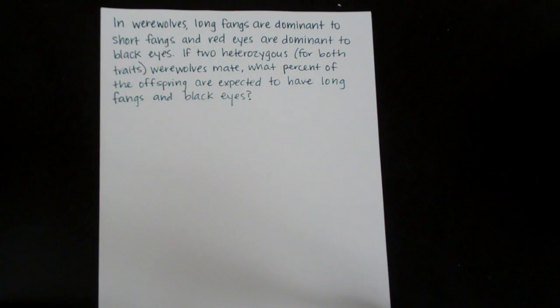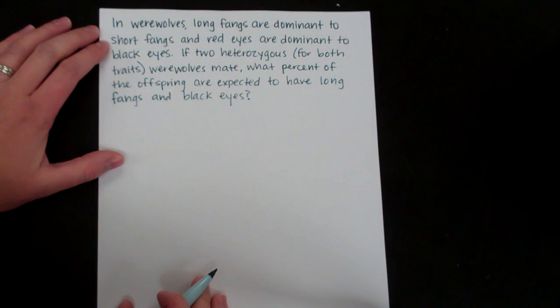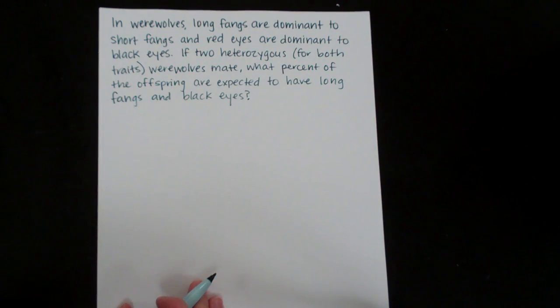So this is called a dihybrid cross because you're looking at two traits at the same time. We're looking at fang length and we're looking at eye color. So first let's assign our alleles.